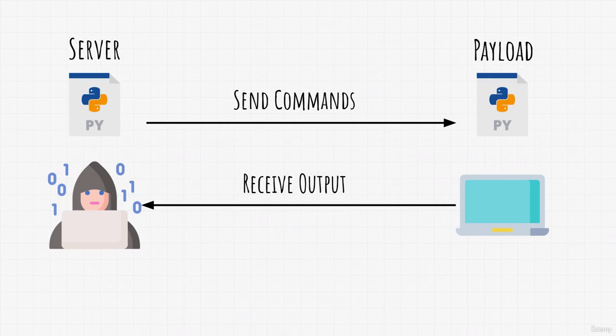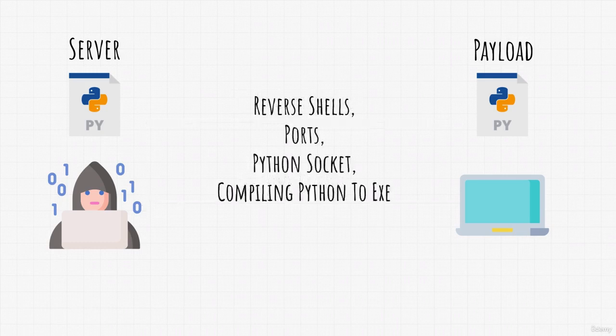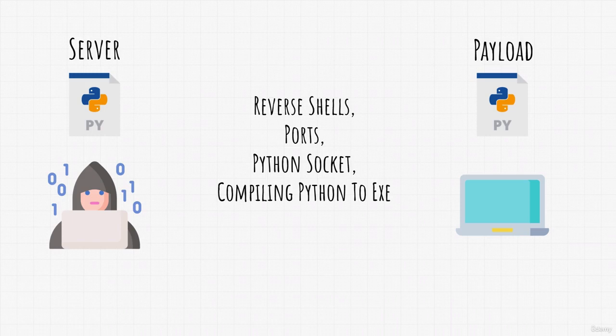To code this, we will need knowledge of reverse shells, which we already have since we covered the exploitation section — we know exactly how reverse shells work. Another thing that we must be familiar with are ports and IP addresses, which is also something that we know. We also need to be familiar with Python sockets, which we briefly touched in our first coding project. I will do my best to explain it once again in the code that we are going to use.